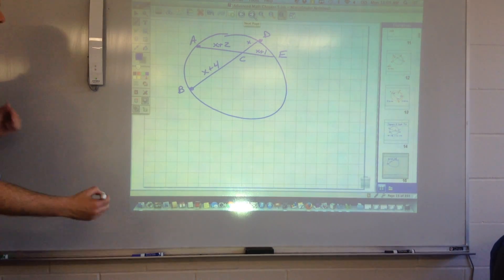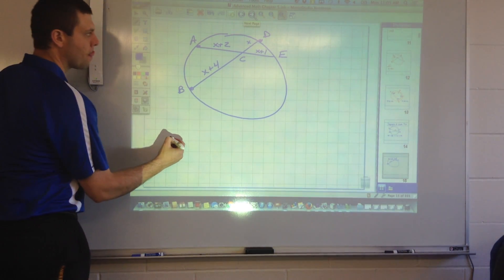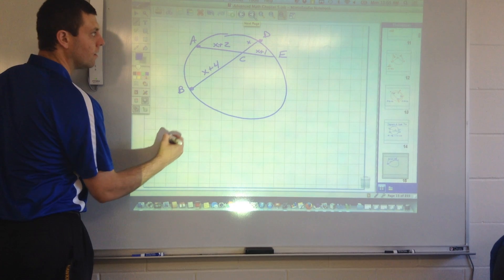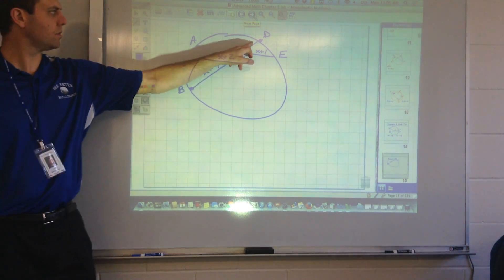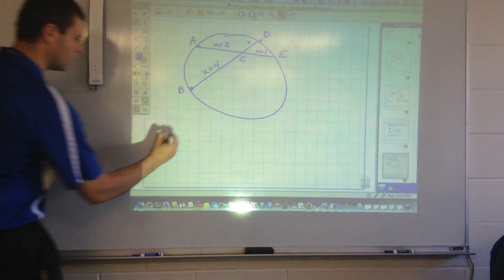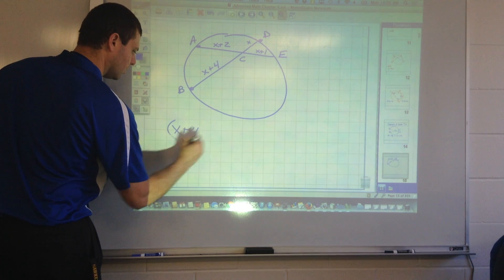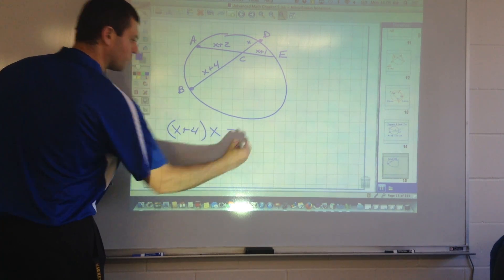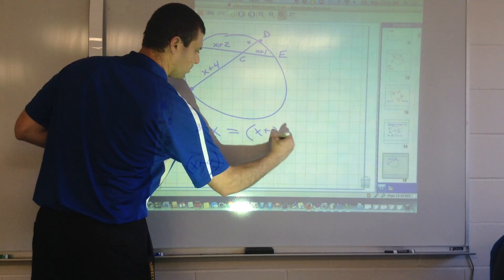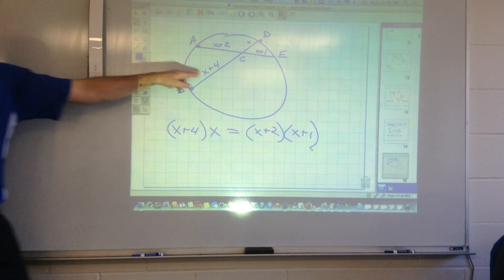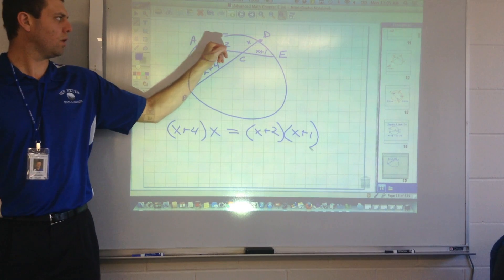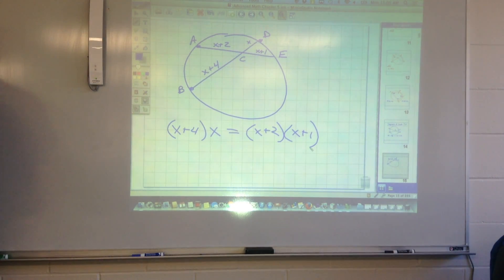So on our problem, what am I going to do? X plus 4 times X equals X plus 2 times X plus 1. So X plus 4 times X equals X plus 2 times X plus 1, right? X plus 4 times X has to equal X plus 2 times X plus 1. Okay?